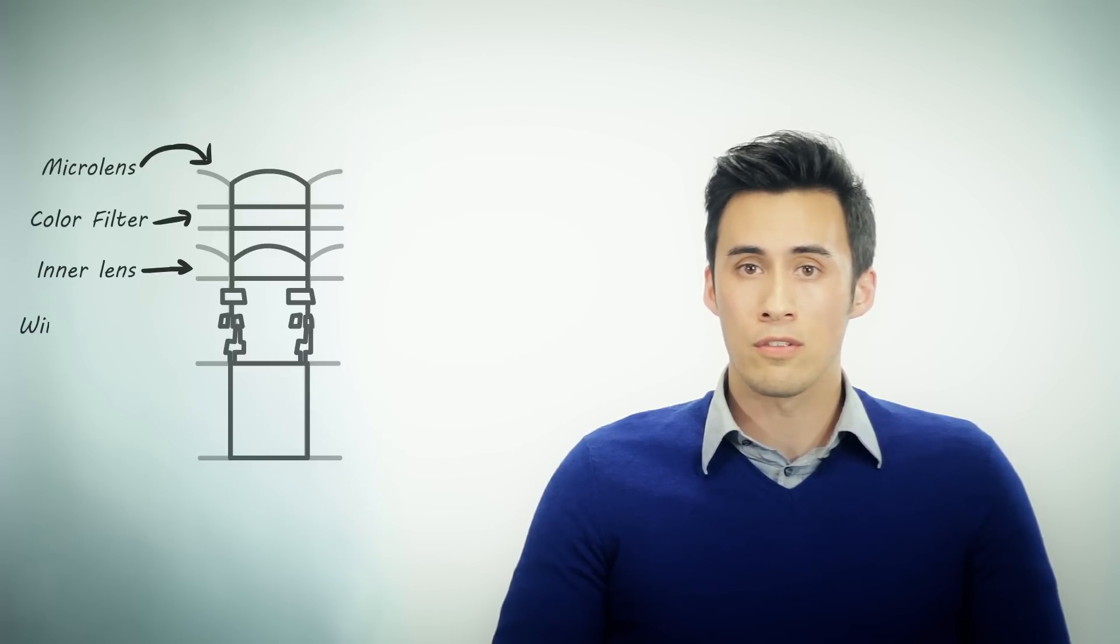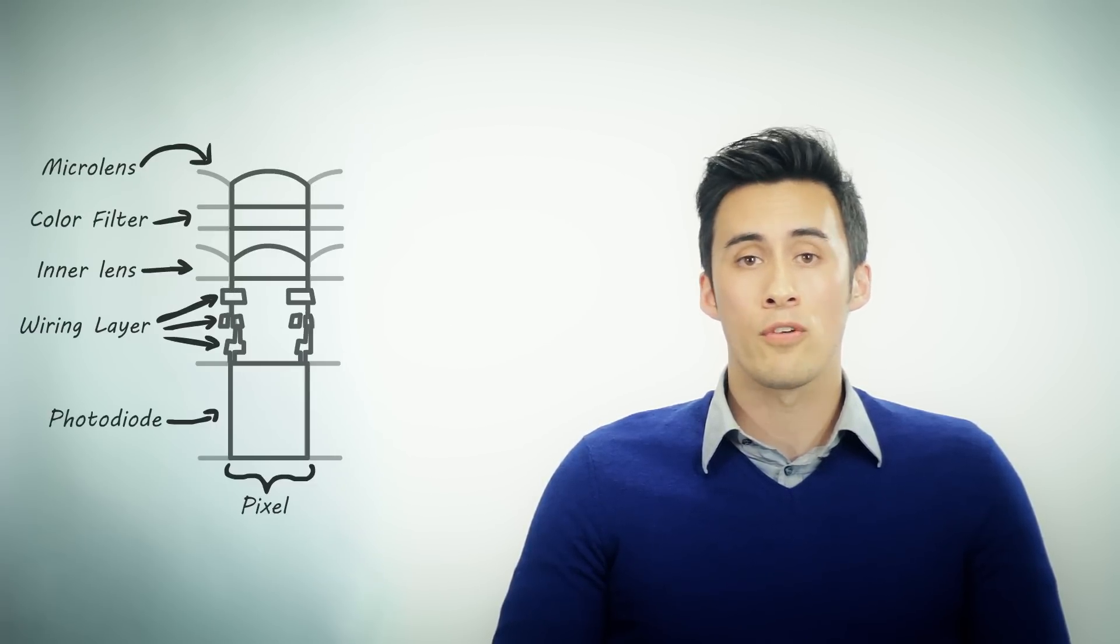If we take a cross-sectional look of a pixel from a conventional CMOS sensor, we'll see five layers: a micro lens, color filter, an inner lens, a wiring layer, and the photodiode.